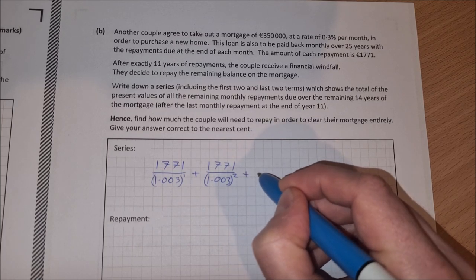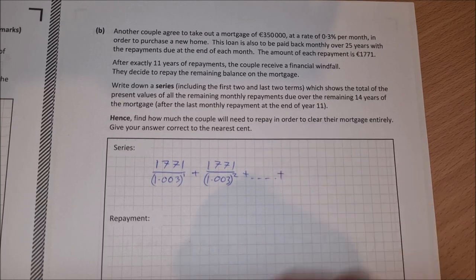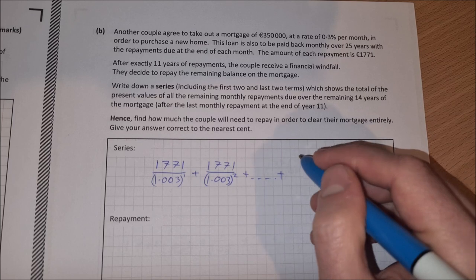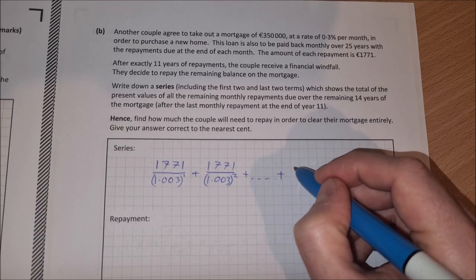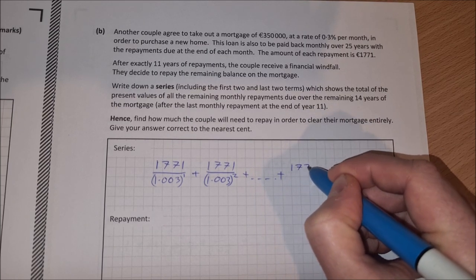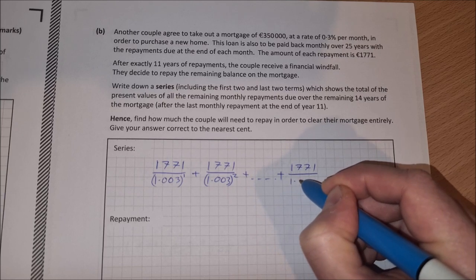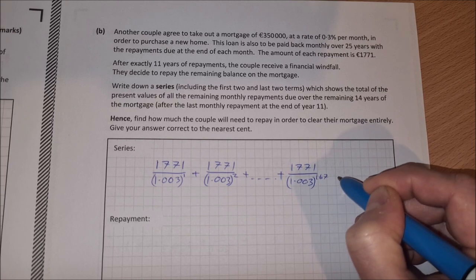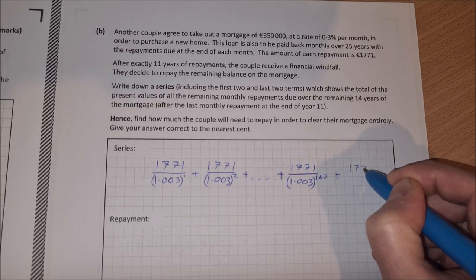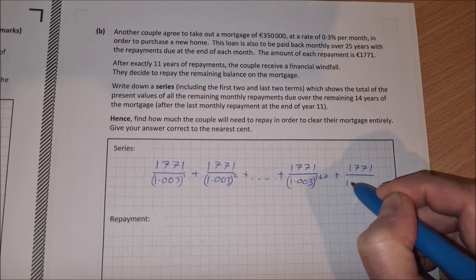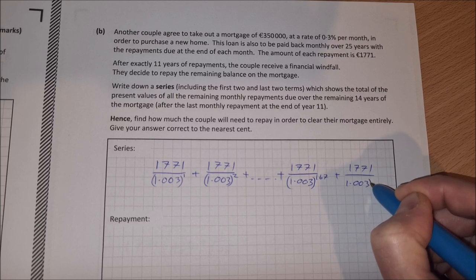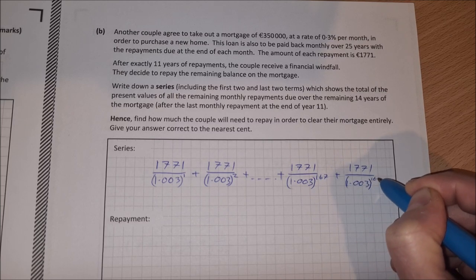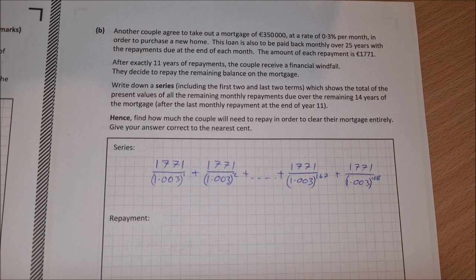And then this will continue on for 168 repayments. So for the last two, because it wants the first two and the last two, 1771 divided by 1.003 to the power of 167, and then plus 1771 divided by 1.003 to the power of 168. So that is our series.